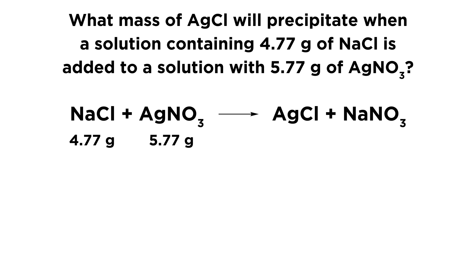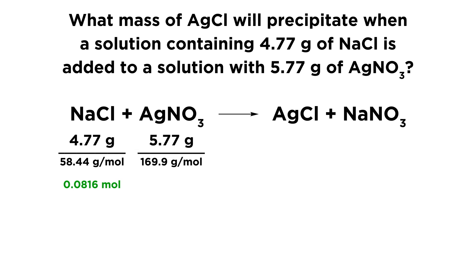Now let's use the data that we have. We know that we have 4.77 grams of sodium chloride and 5.77 grams of silver nitrate. Let's convert these to moles, because masses alone won't help us. 4.77 grams divided by 58.44 grams per mole — the molar mass of sodium chloride — gives us 0.0816 moles of sodium chloride. Then 5.77 grams of silver nitrate divided by 169.9 grams per mole — the molar mass of silver nitrate — gives us 0.340 moles of silver nitrate.